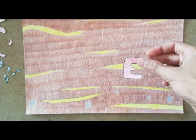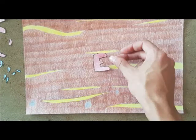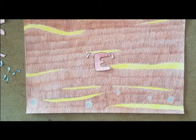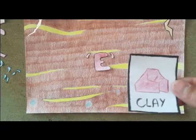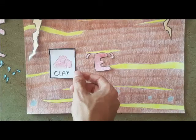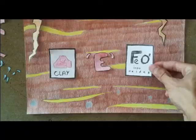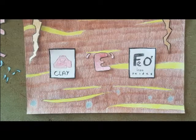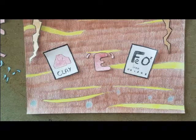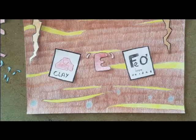The third horizon is E, or eluviated, being composed of clay and oxides of iron, and sometimes roots can reach there.